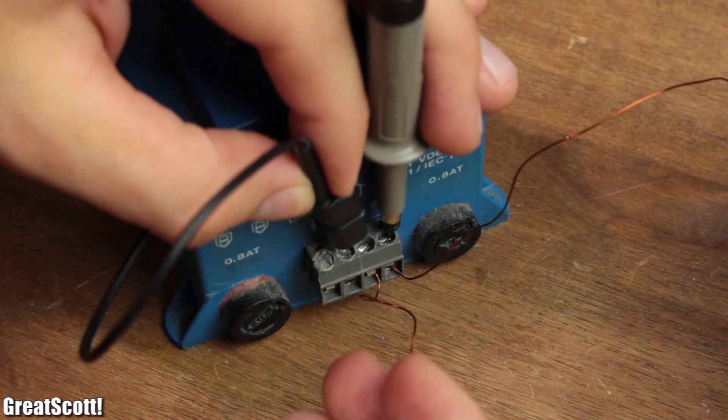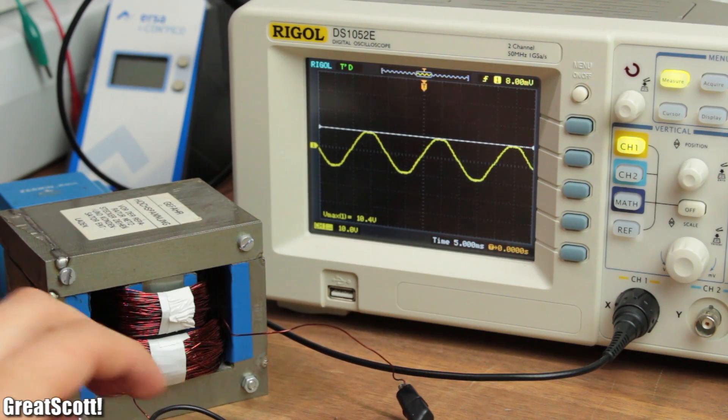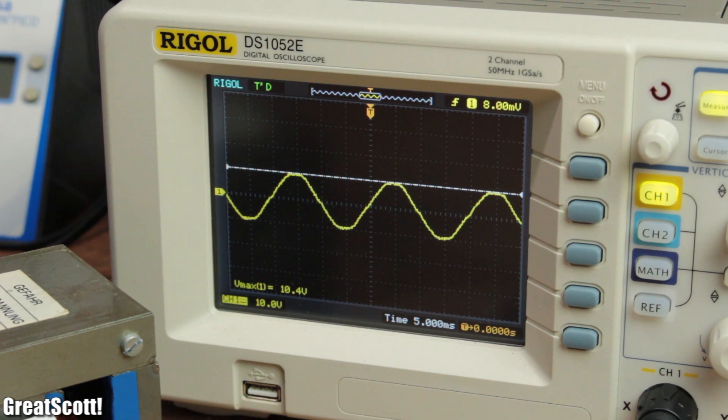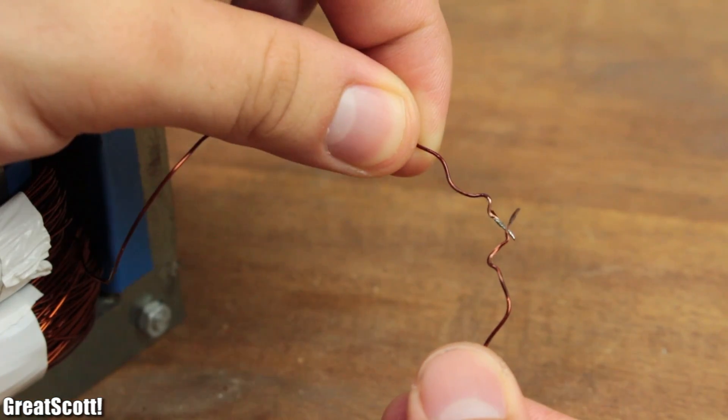If I use a 25 volt peak sine wave as an input, we get around 10 volts at the output. So it works as a transformer. And as expected, the 50 Hz hum still exists. So where does it come from?